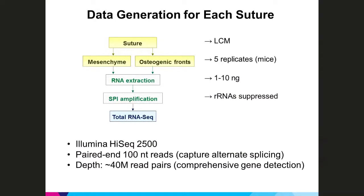This shows the workflow for RNA-seq library generation. For each suture we have five biological replicates, in almost all cases from a single embryo. Libraries are generated from between one to ten nanograms of RNA, requiring RNA amplification. The libraries are typically sequenced on an Illumina HiSeq 2500 platform with paired-end sequencing of 100-nucleotide reads to capture alternate splicing, with sufficient read depth for comprehensive gene expression detection.